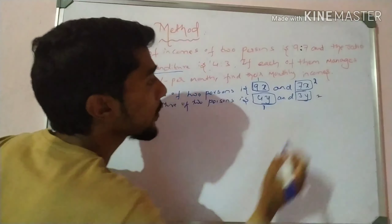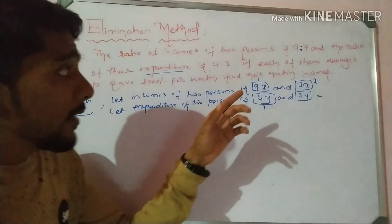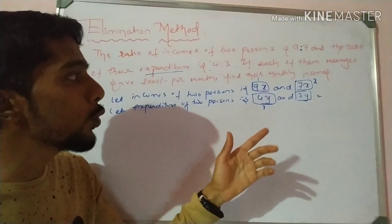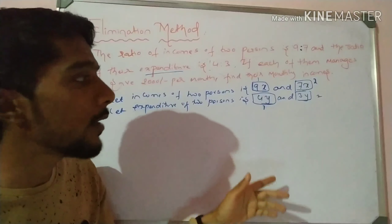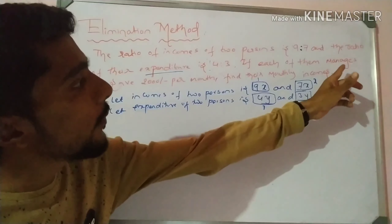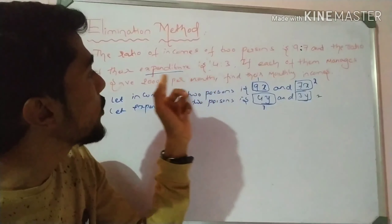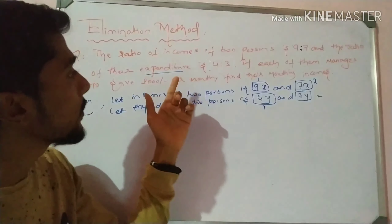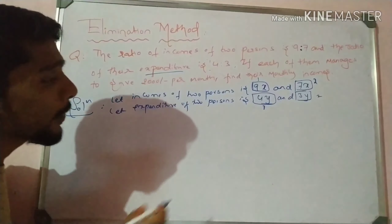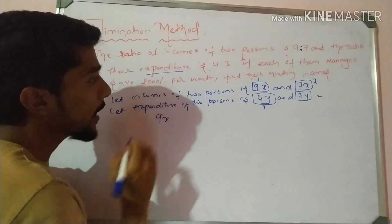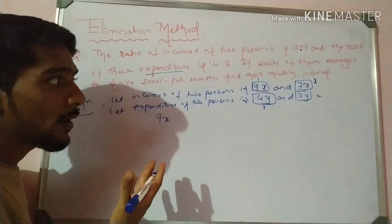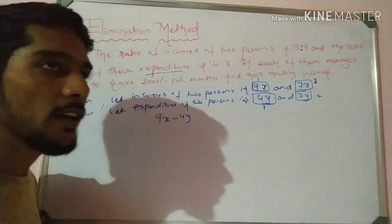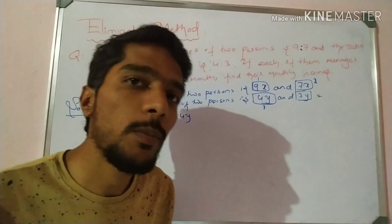I use x for income and y for expenditure. Let the incomes of two persons be in the ratio 9 is to 7, so their incomes are 9x and 7x. Here x is the common ratio between the incomes.